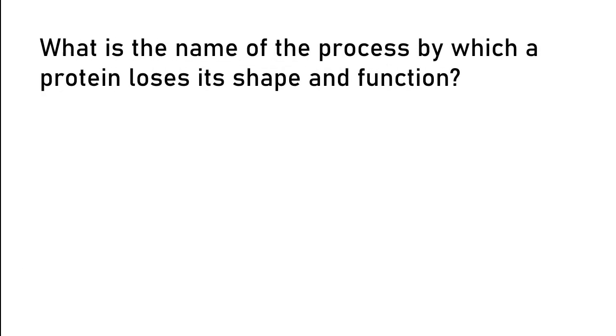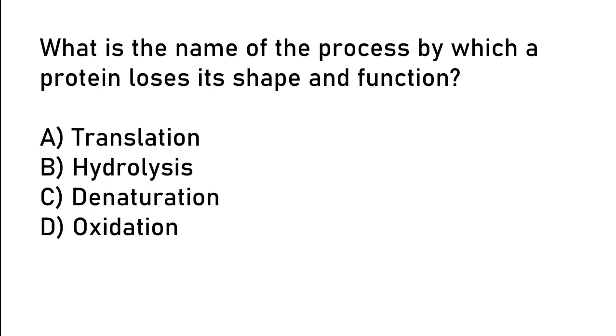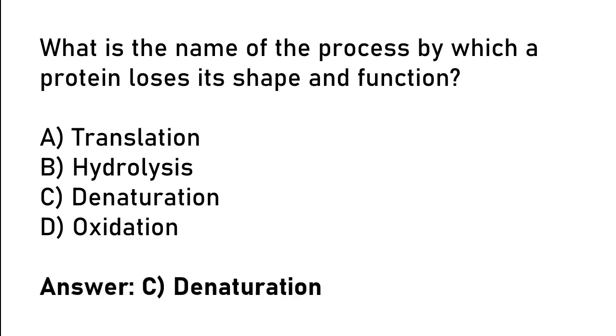What is the name of the process by which a protein loses its shape and function? Translation, hydrolysis, denaturation, oxidation. So the correct answer is option C. Denaturation.